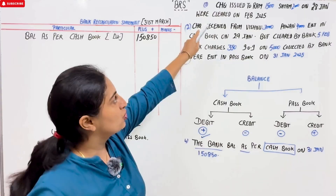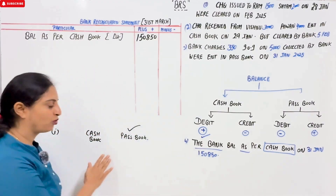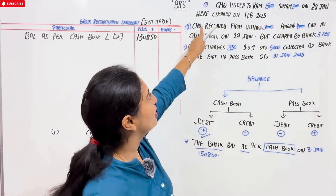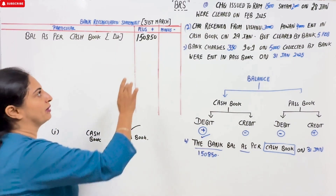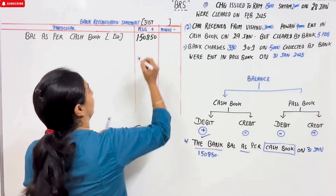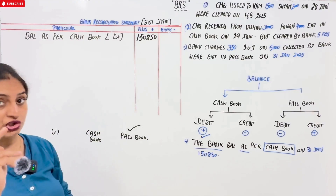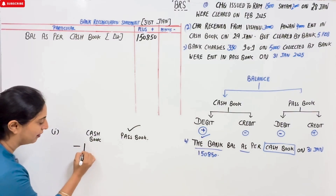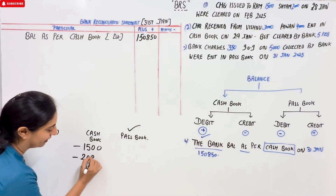Transaction 1: checks issued to RAM ₹1500 and SHAM ₹2000 on 28th January. Our BRS is for which month? January. According to our cash book, we already recorded minus ₹1500 and minus ₹2000 — a total deduction of ₹3500. But in the passbook on 31st January, these transactions were not yet processed because they were cleared only in February.